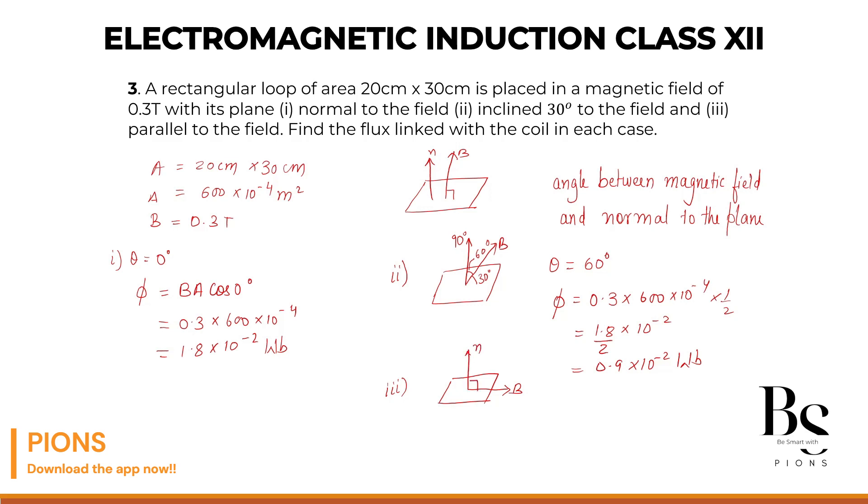So what will be the angle between magnetic field and the normal in this case? Sir 90 degree. What's the angle between plane and the magnetic field? Sir 0 degree. Correct. So here theta will be 90 degree. And since theta is 90 degree in the third case. What is cos 90? Sir cos 90 is 0.